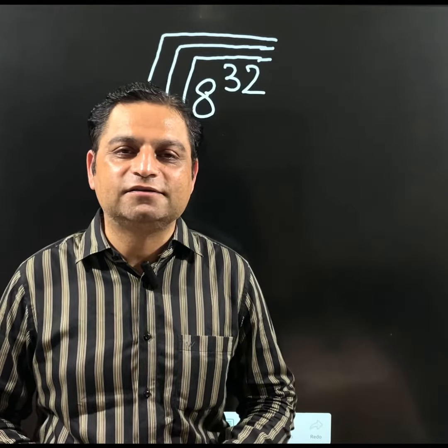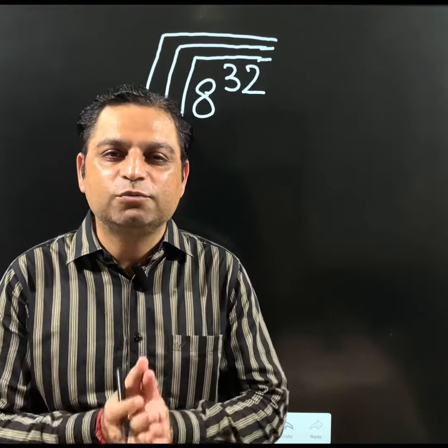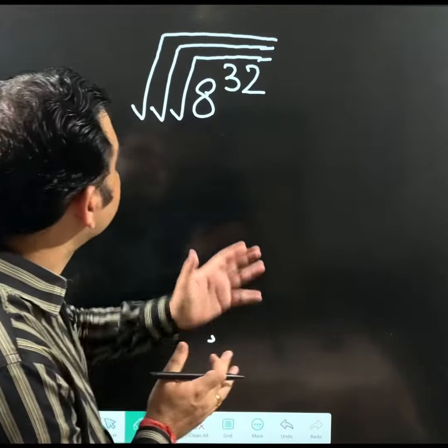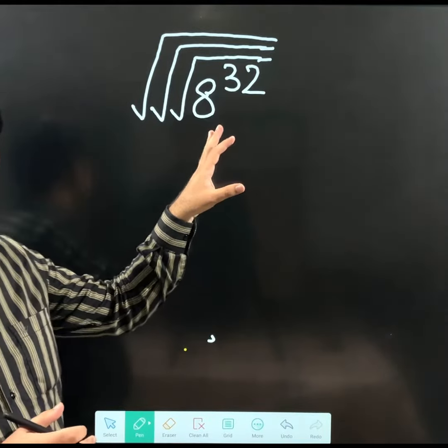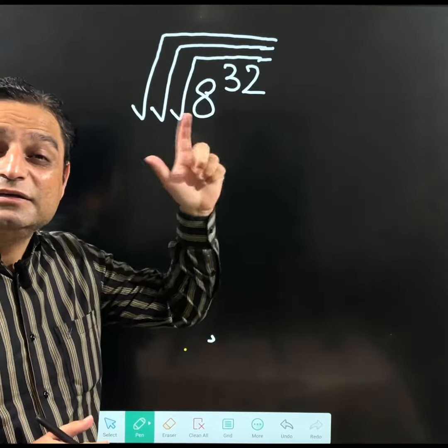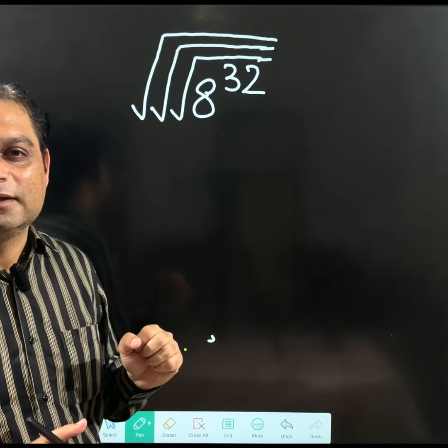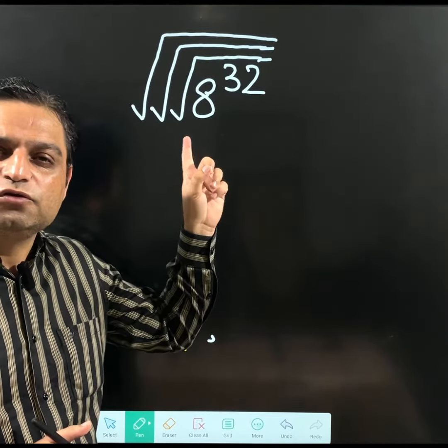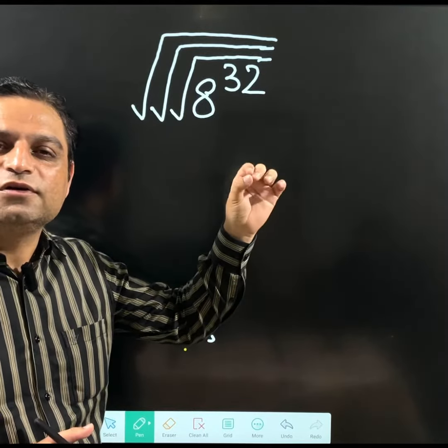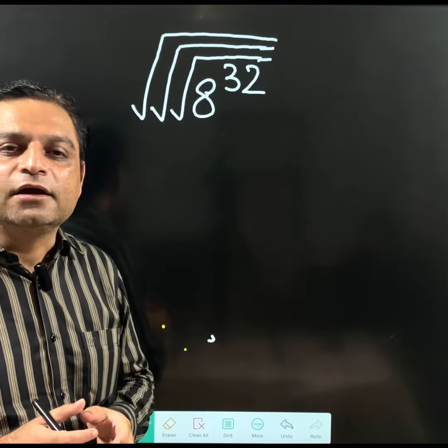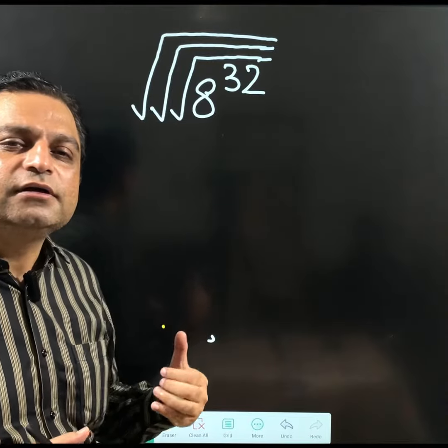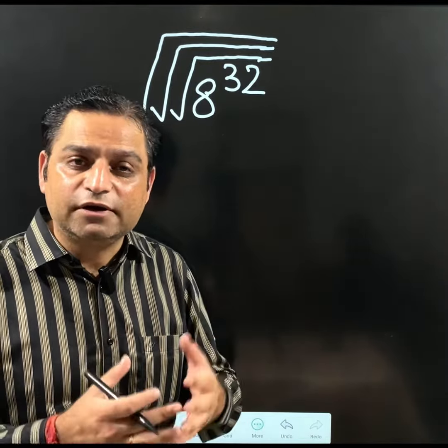Hello friends, welcome to Nankishore classes. Today's lecture is going to be very interesting. Have a look at the question. We need to solve this multiple square root problem. There are three roots over there and 8 to the power 32 is there in between. And we need to solve it, simplify and reach at the final answer.